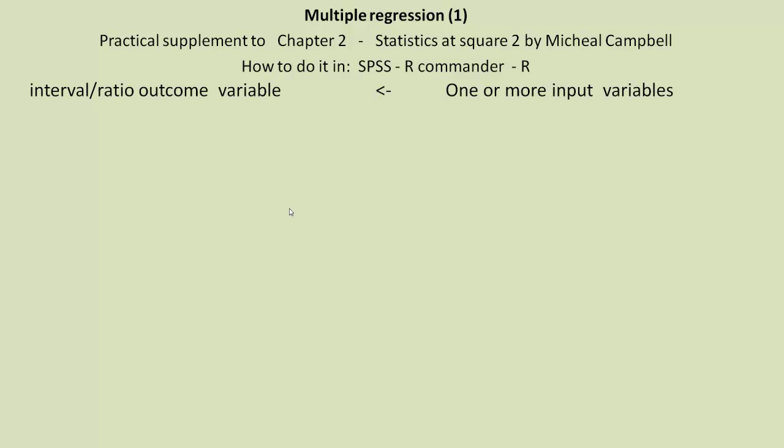Just as a revision, remember that multiple regression is where you have one or more input variables shown here on the right, and on the left we have one outcome variable which must be interval or ratio type.